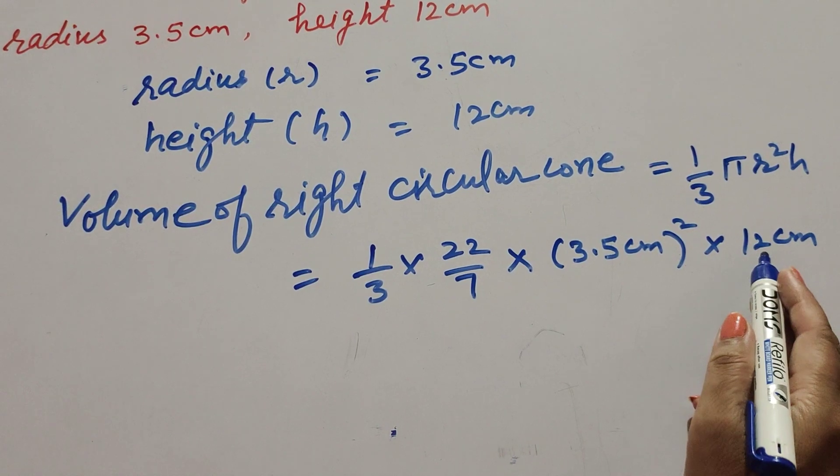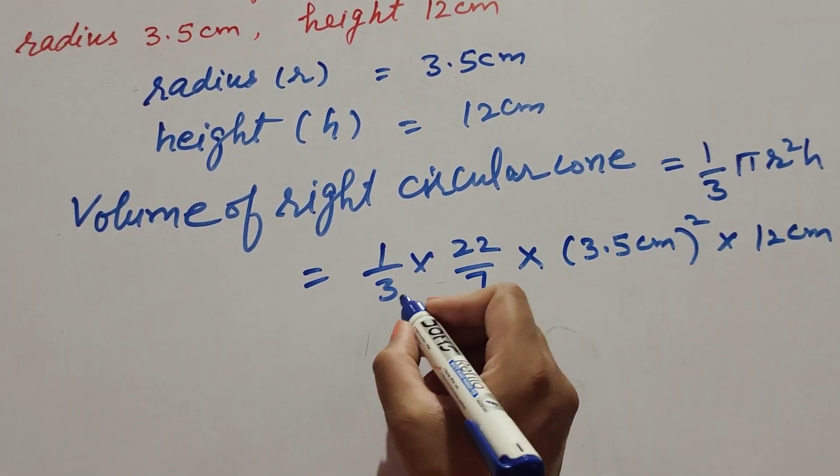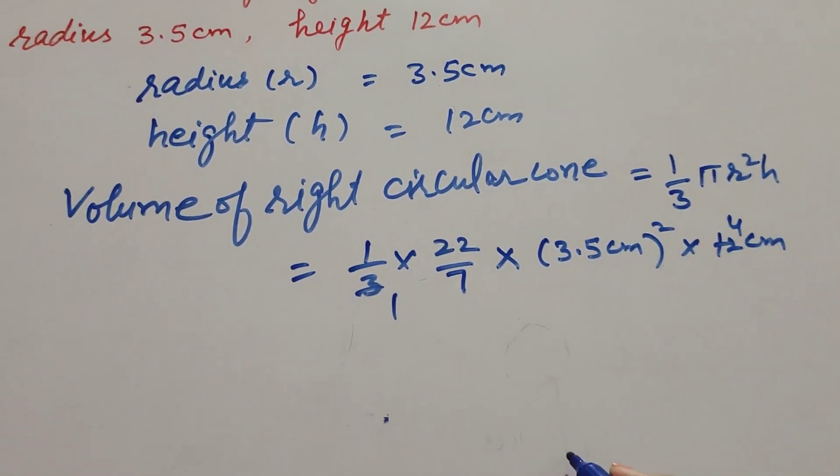3 and 12 are both divisible by 3, so we cancel them. 3 ones are 3, 3 fours are 12. We get one-seventh times 3.5 times 3.5 cm cubed.